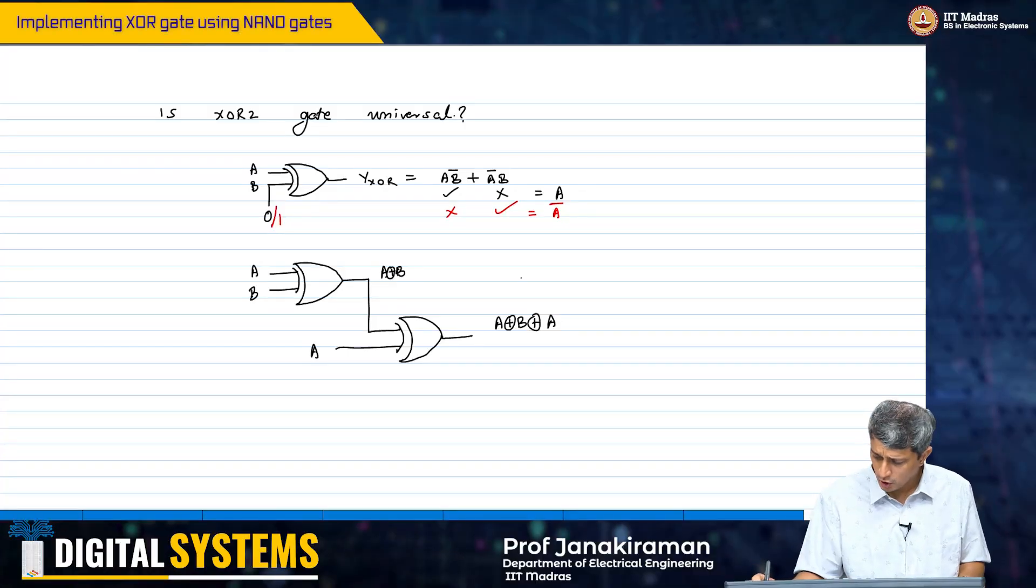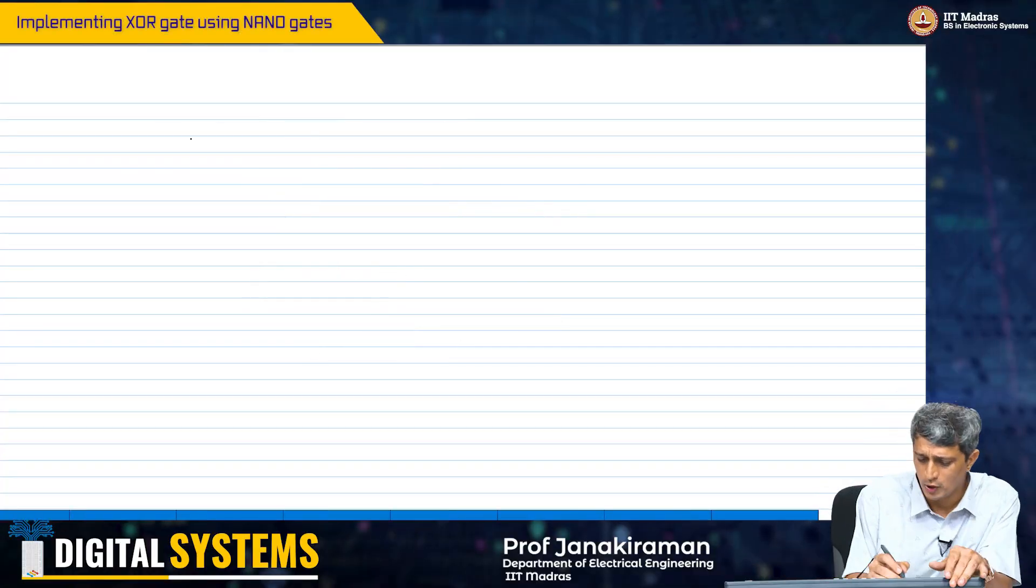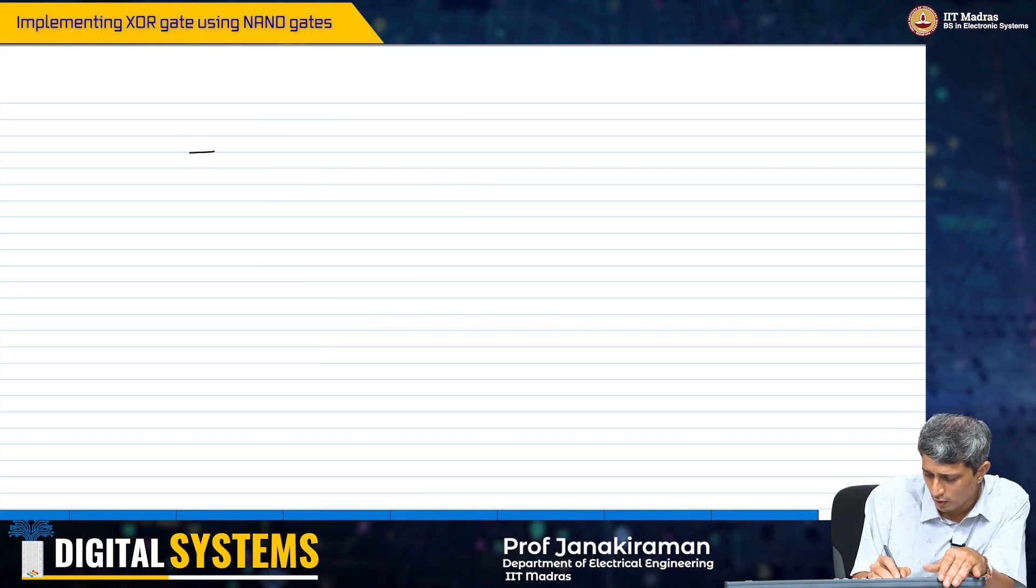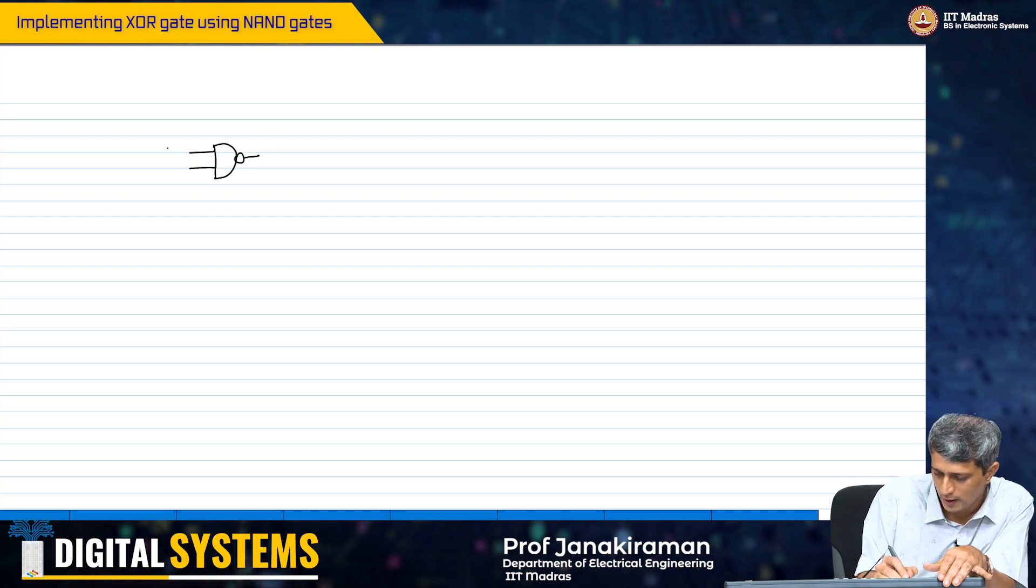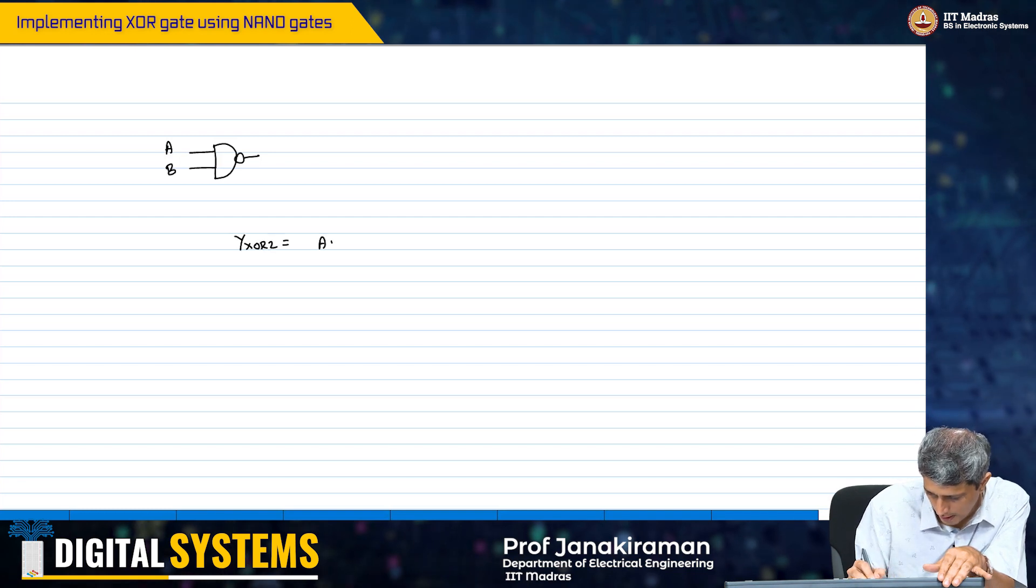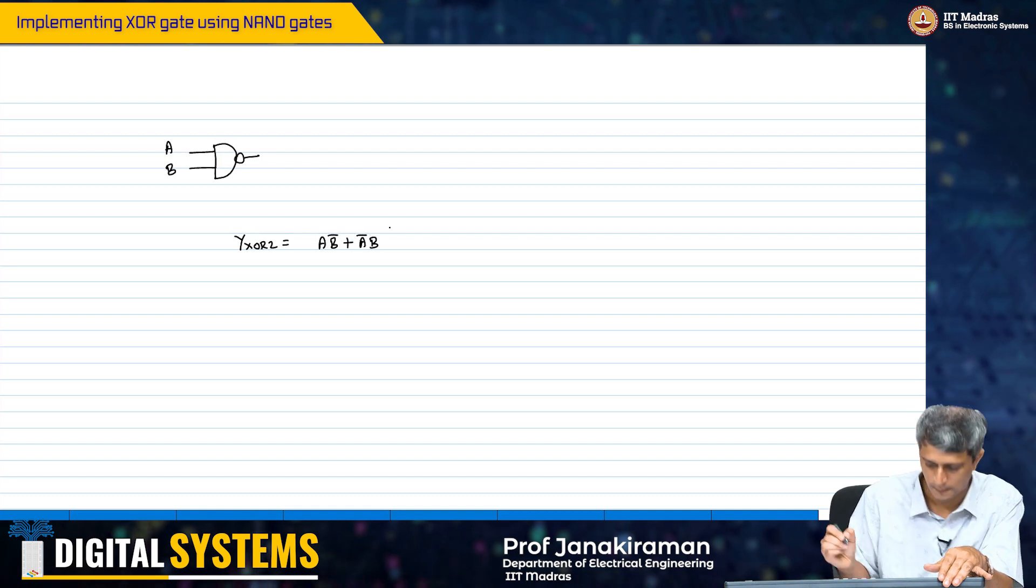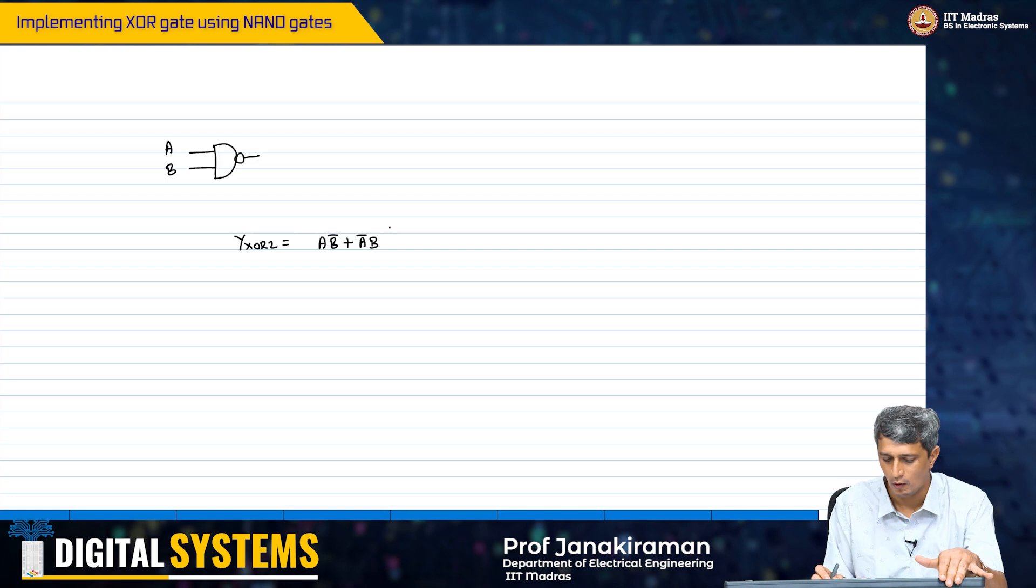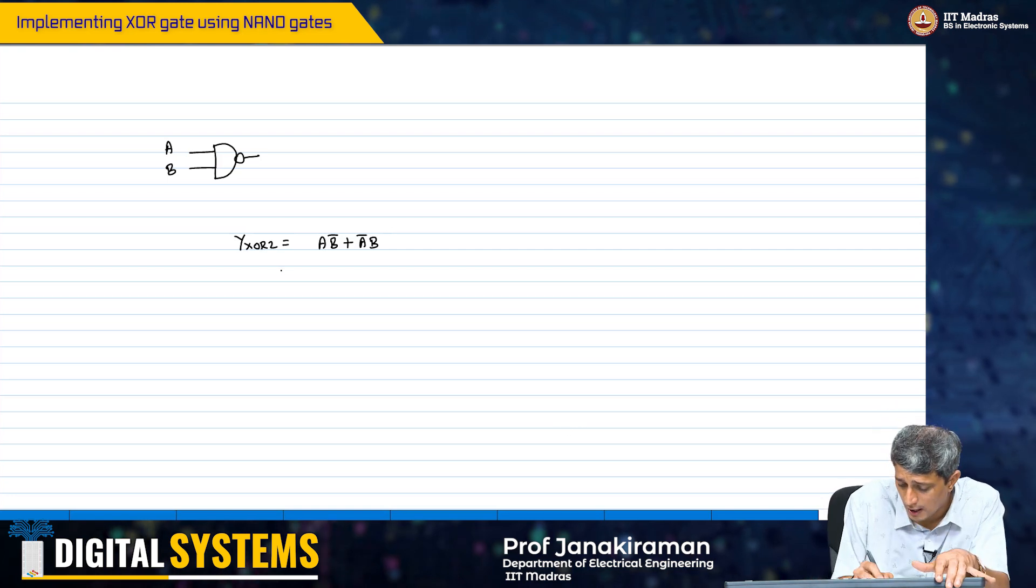While on the topic of XOR, we could also look at a simple implementation of the XOR gate using the NAND 2 gate. This is a, b, I have Y_XOR2 equal to AB̄ plus Ā B. This is what I want and I need to implement this using NAND 2 gates.